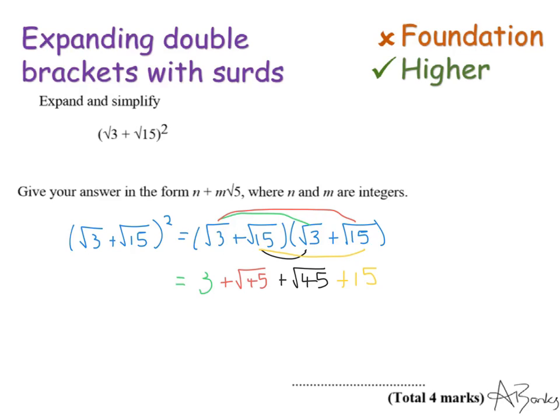Now I've got to do a little bit of extra work here simplifying this. So I have 18, plus I've got root 45 add root 45, so that's 2 root 45. And if it said simplest form, I need to simplify this. It doesn't say simplest form, but it says it wants it in the form of n plus something root 5. So I know here this should be a root 5, not a root 45.